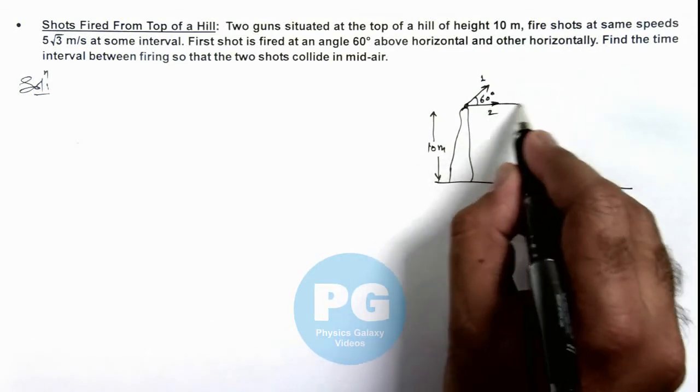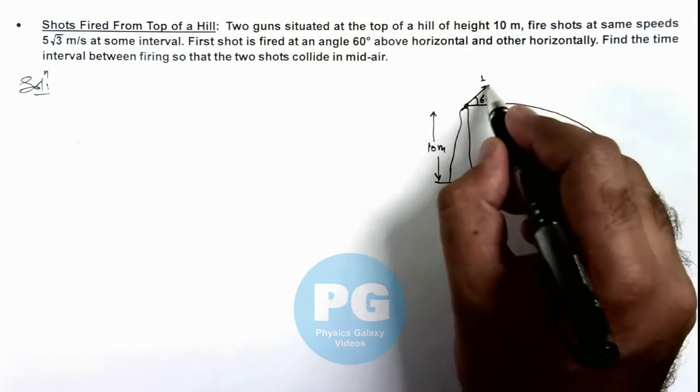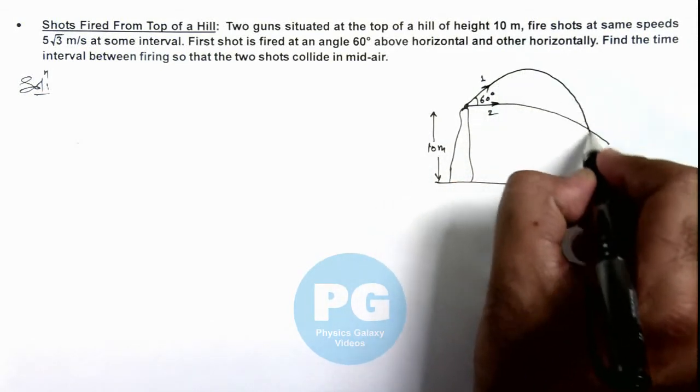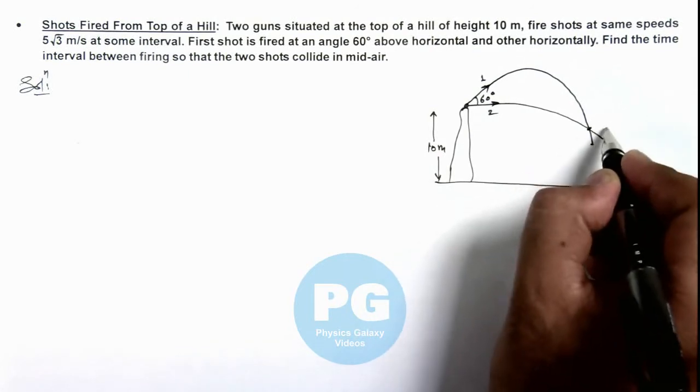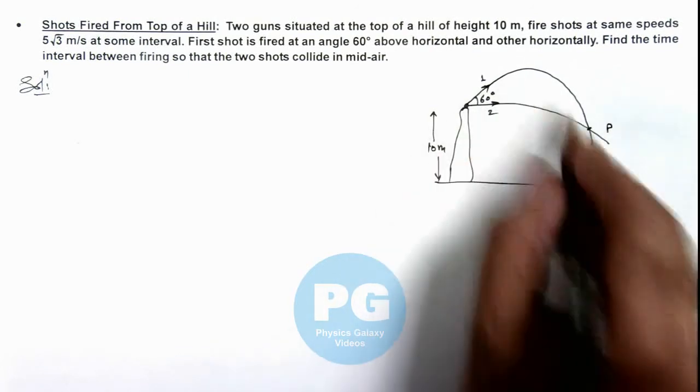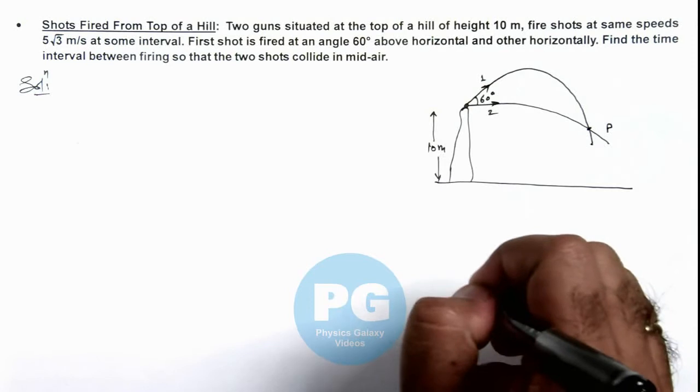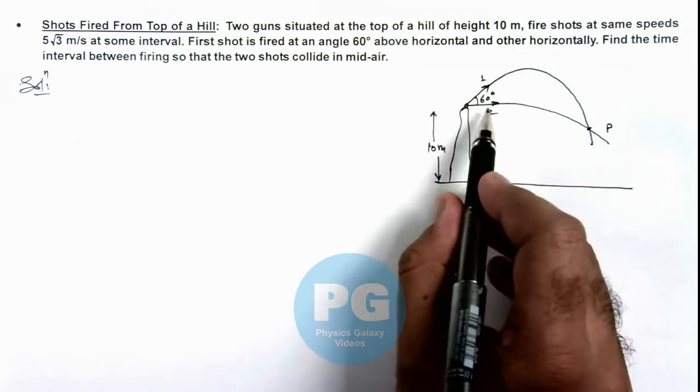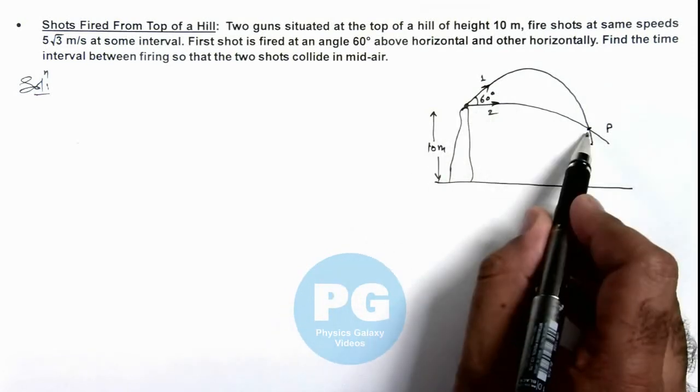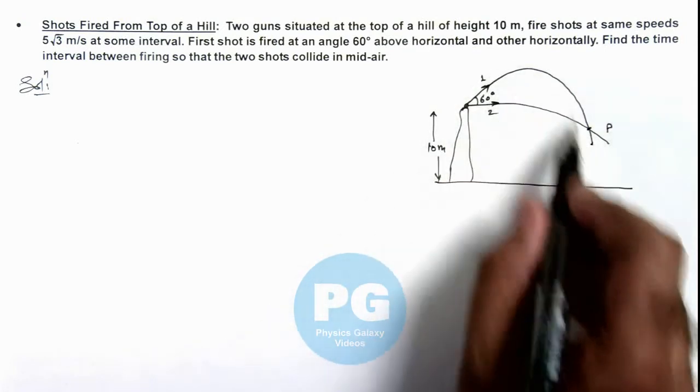Then it'll follow a horizontal projectile and the other 1 will follow again a parabolic trajectory and say this is the point p where the 2 shots may collide. Obviously we can see 2 will take lesser time in reaching point p and 1 will take longer time.